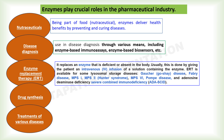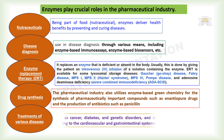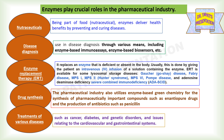ERT is available for some lysosomal storage diseases such as Gaucher disease, MPS1, MPS2, MPS6, Pompe disease, and adenosine deaminase deficiency severe combined immunodeficiency (ADA-SCID). ERT does not correct the underlying genetic defect but increases the concentration of the enzyme that the patient is lacking. The pharmaceutical industry also utilizes enzyme-based green chemistry for the synthesis of pharmaceutically important compounds such as enantiopure drugs and antibiotics like penicillin. Enzymes are also utilized for the treatment of various diseases including cancer, diabetes, genetic disorders, and cardiovascular and gastrointestinal issues.